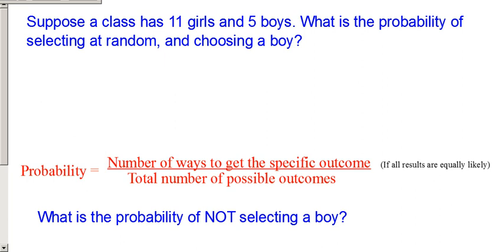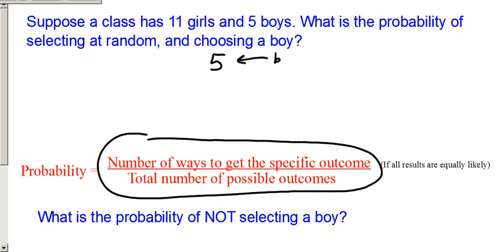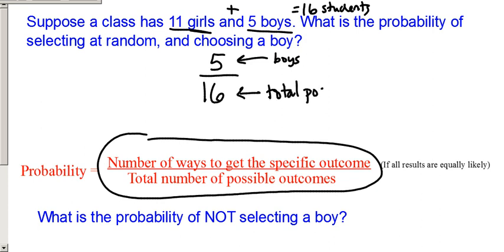So with this one, let's say we have a class, and in this classroom there are 11 girls and 5 boys. So what's the probability of selecting at random? So we just kind of pick a random name out of the class and choosing a boy. So going back to this definition, the number of ways to get the specific outcome would be 5 because there are 5 boys in the class. And then we have to look at the total number of possible outcomes. We have 11 girls plus 5 boys, so we have 16 students all together. Out of this class there are 16 people they could choose. So there are 16 total possible outcomes. So the probability of choosing a boy from the class is 5 out of 16.